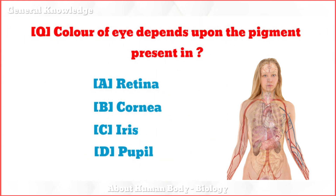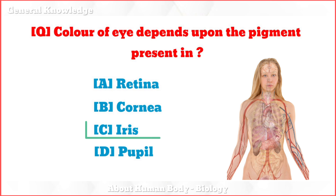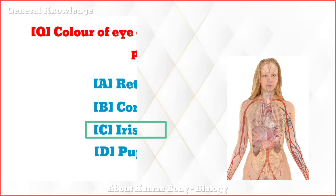The color of the eye depends upon the pigment present in which part? The correct answer is option C: iris.